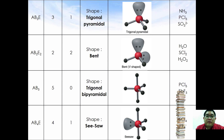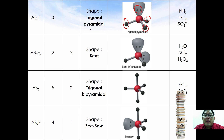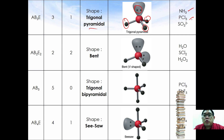If one bond pair is changed to a lone pair electron, so you have three bond pairs and one lone pair, the repulsion causes the shape to become a trigonal pyramid, though the arrangement is similar to tetrahedral. Examples are ammonia, PCl3, and SO3(2-).